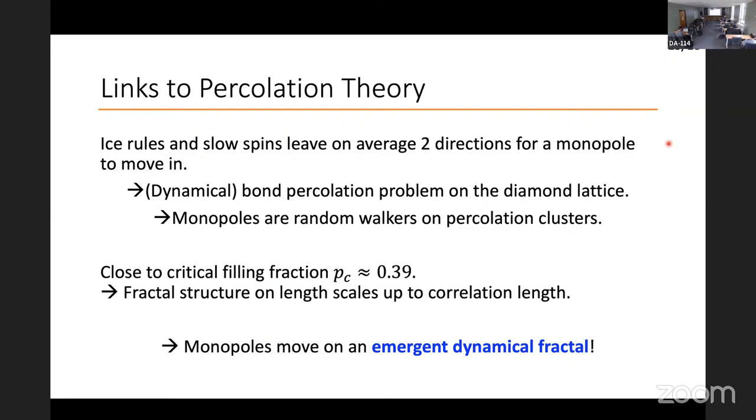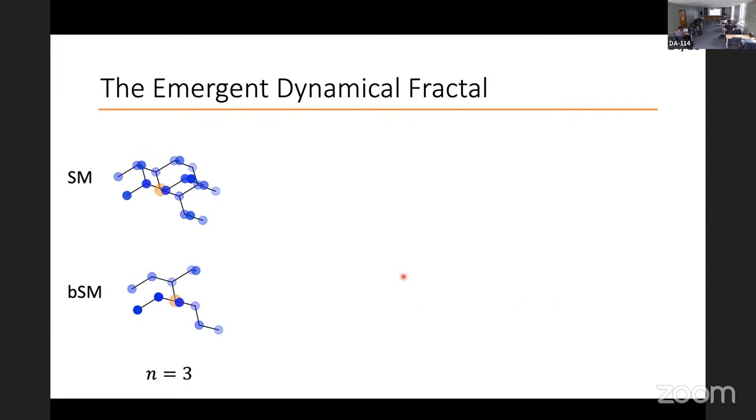How do we link this to spin ice? Hopefully you already have realized this. We have the ice rules, and we have our slow spins. On average, it leaves two directions for monopoles to move in. We can map this onto the percolation model. And since spin ice is disordered, it means that this is actually done randomly, the way it is in a percolation model. So the monopoles are effectively random walkers on percolation clusters. What we also realize is that if you look up the percolation threshold for diamond lattice, it's 0.39. If we sit at one half, we're just a bit above this, and we might expect to actually see effects of this fractal structure up to some correlation length. What we are suggesting is that these anomalous properties come about because monopoles in spin ice move on an emergent dynamical fractal, which appears in this clean, disorder-free system.